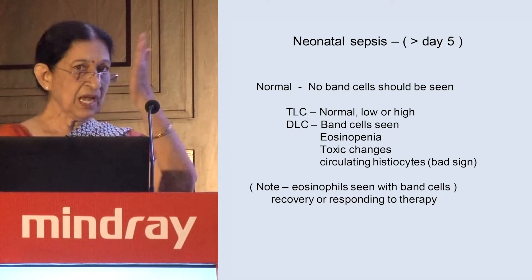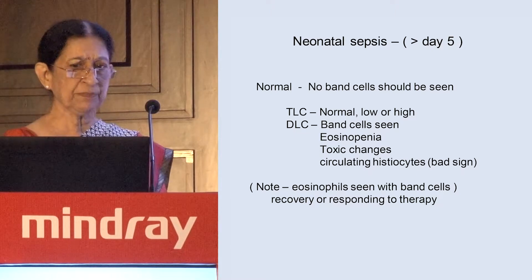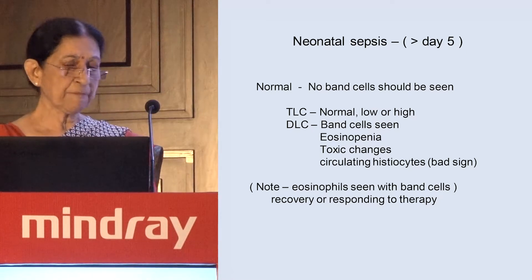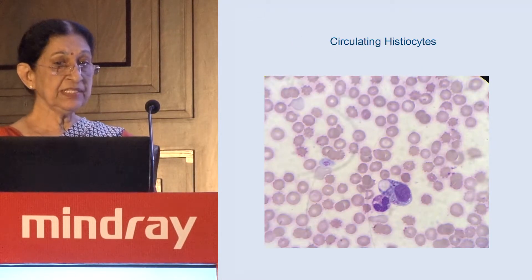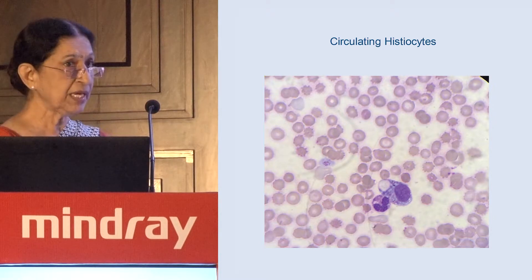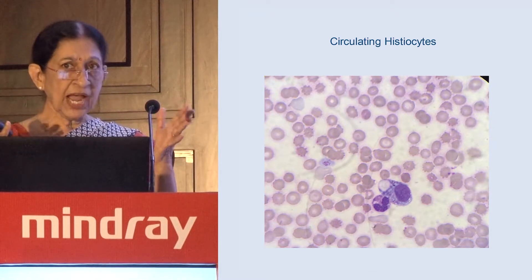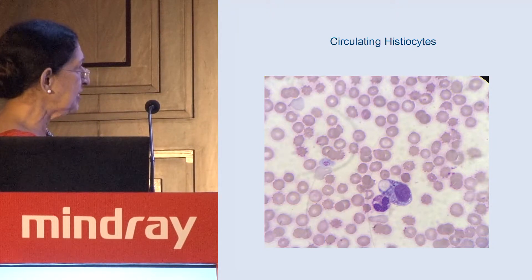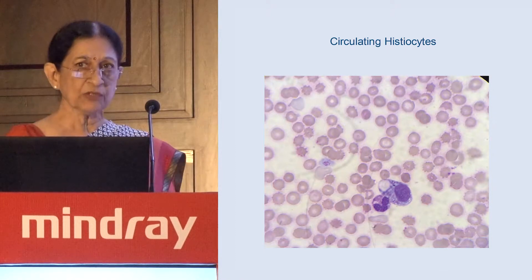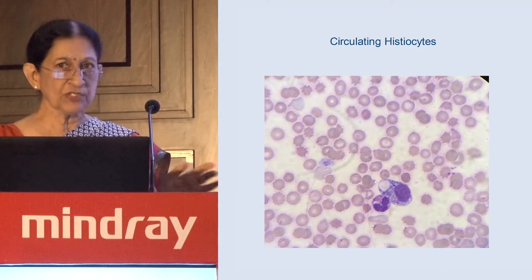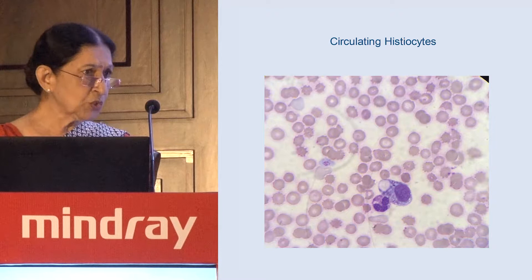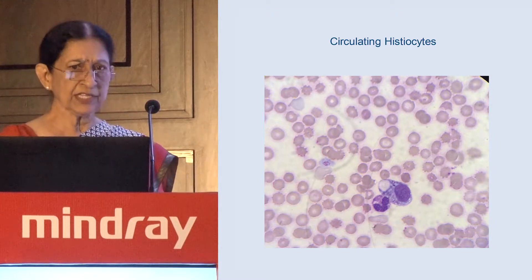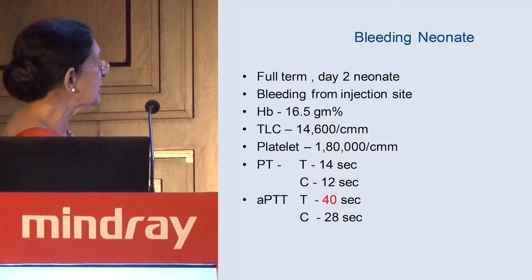If eosinophils appear, the band cells from the previous week are still present but will take time to disappear — meaning the baby is recovering. However, if you see giant monocytes or histiocyte-like cells engulfing RBCs or debris in the peripheral smear, with no eosinophils, the baby is doomed — this indicates severe sepsis.